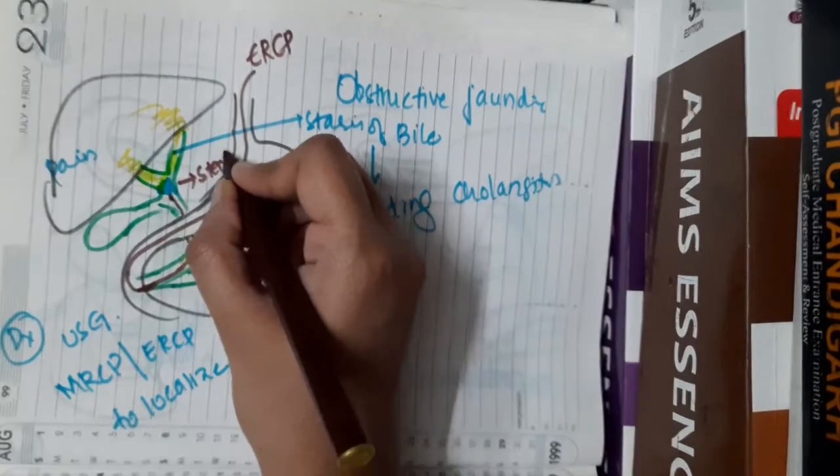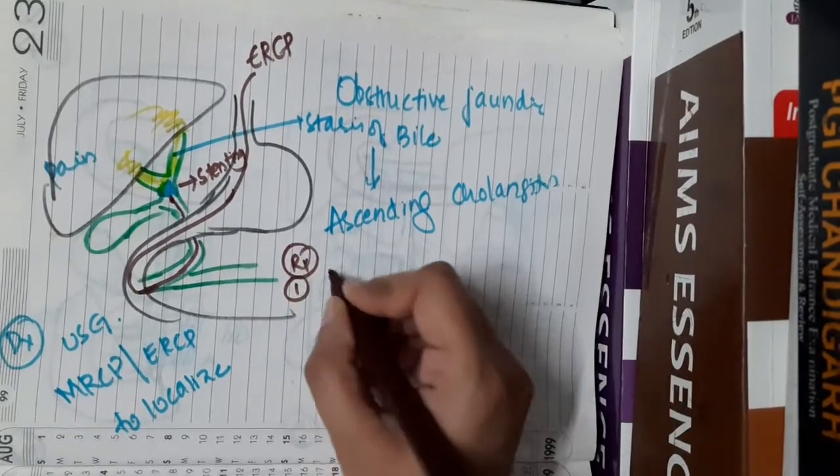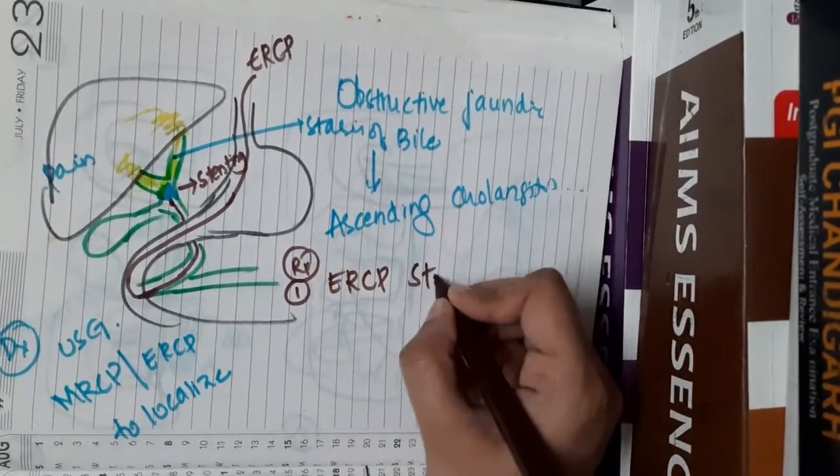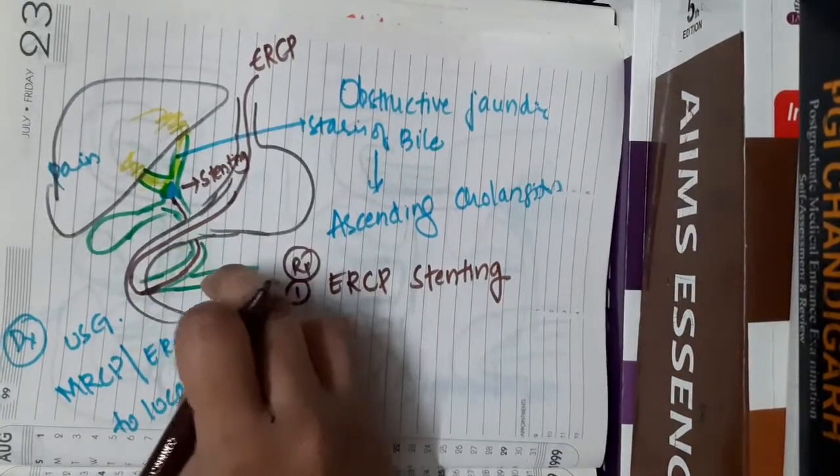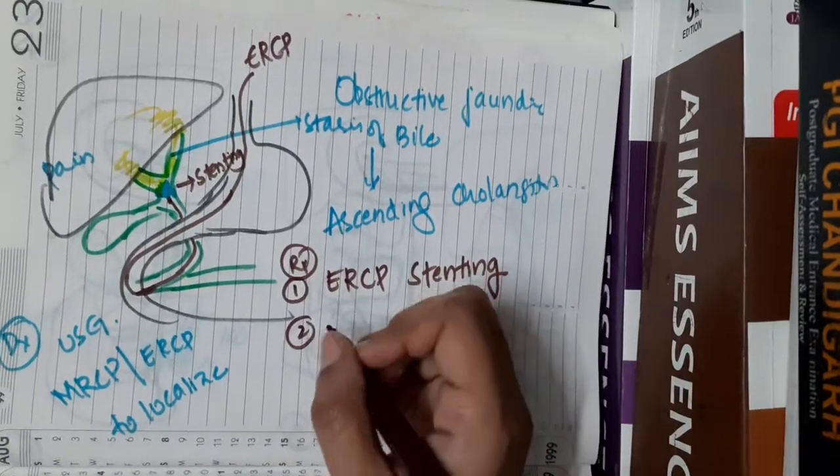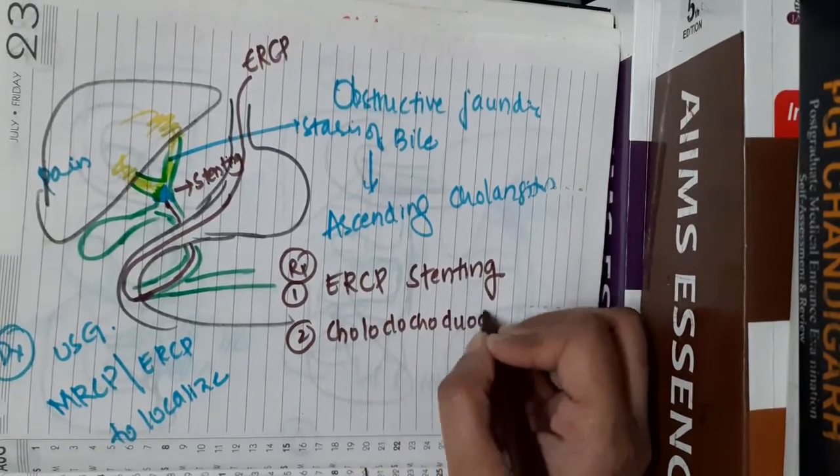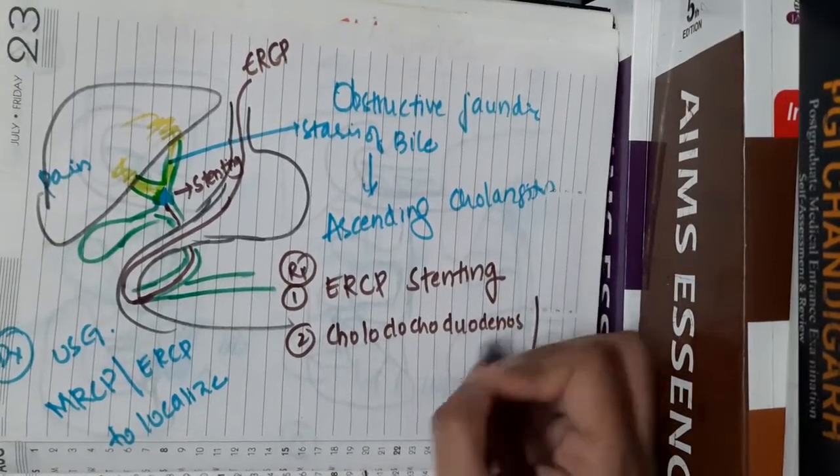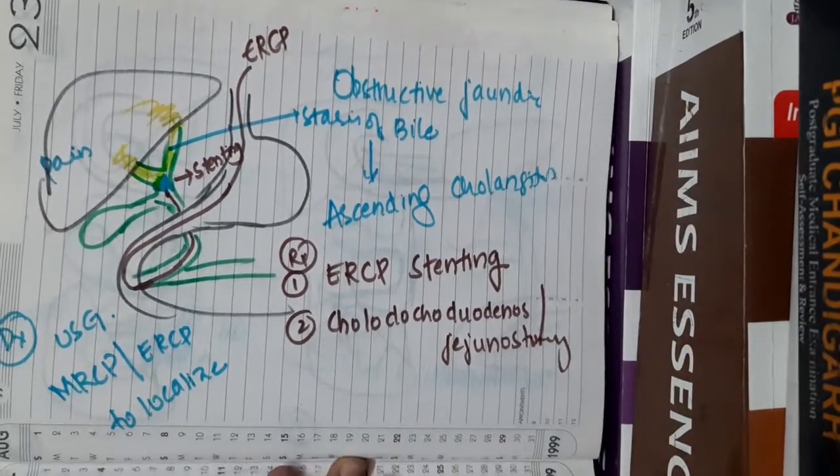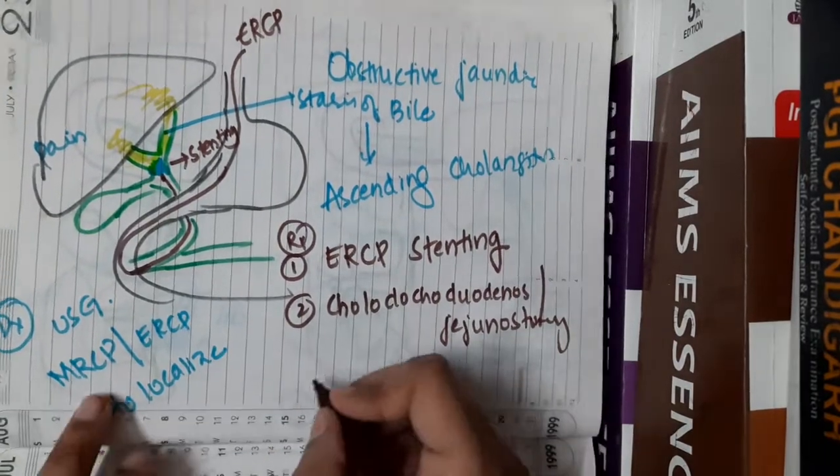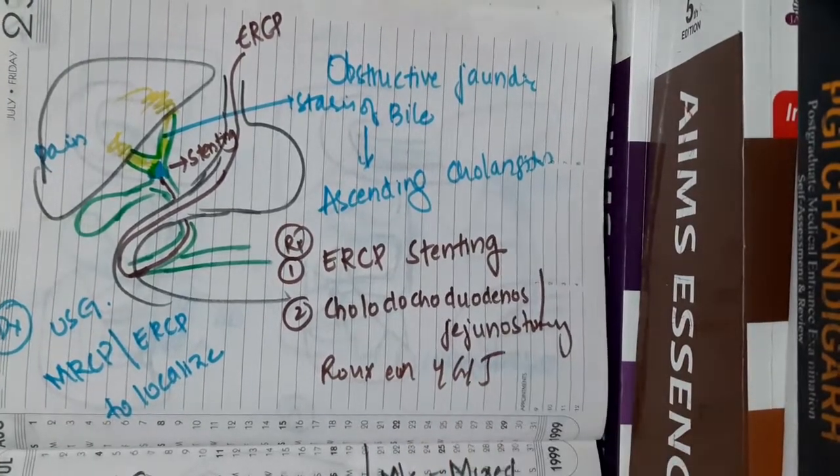The treatment is: first you can do endoscopic retrograde cholangiopancreatography stenting, or you can remove this part of the bile duct with biliary tree and do choledochojejunostomy. You can do anastomosis with duodenum or anastomosis with jejunum—that is, choledochojejunostomy—or you can do Roux-en-Y hepaticojejunostomy.